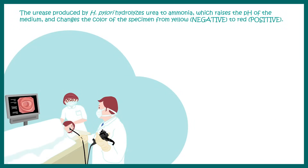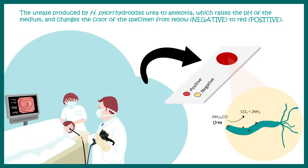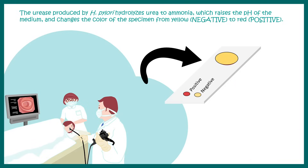The best test for Helicobacter pylori is endoscopy, where the doctor enters an endoscope through your alimentary canal to visualize the stomach and takes a small biopsy sample. Small strips are available to perform a urease test on this sample. Since Helicobacter pylori has urease enzyme, if urease is present there would be ammonia production, and the indicator on the strip will change color. Red coloration means positive for Helicobacter pylori infection, while yellow means no infection.